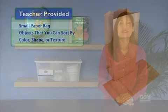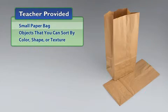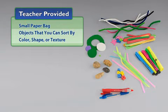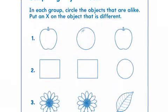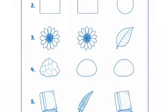You will also need to provide a small paper bag and objects that you can sort by color, shape, or texture, such as crayons and leaves. To prepare for this activity, make a copy of Activity Sheet 2 for each student.